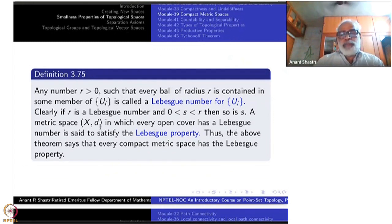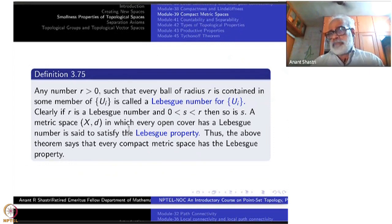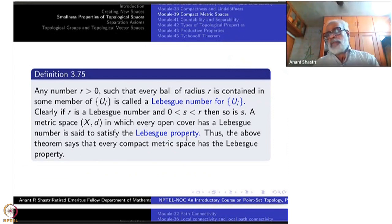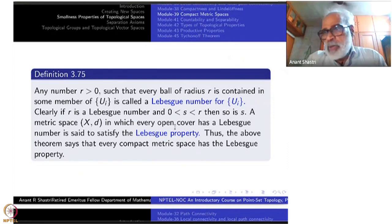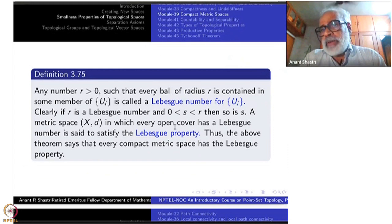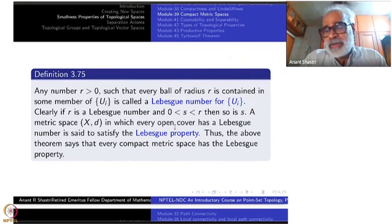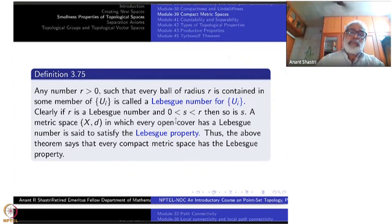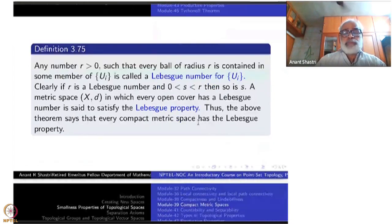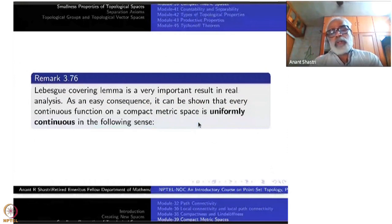A metric space (X, d) which has this property — that every open cover has a Lebesgue number — is said to satisfy the Lebesgue property. If this happens for every open cover in a metric space, we call X a Lebesgue space. In this terminology, what we have proved is that every compact metric space has the Lebesgue property. There may be other spaces with this property, and we don't know yet if that implies compactness.